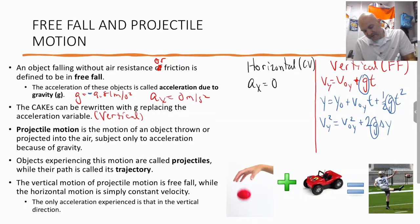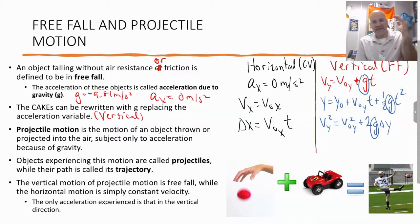So our horizontal motion is a constant velocity of motion. Well, what does that mean? There is no acceleration. So our equations become even simpler, where we say vx equals vox, and delta x is equal to vox t. Because all I do is I basically take the cakes and take away all the a values, or set a equals zero.